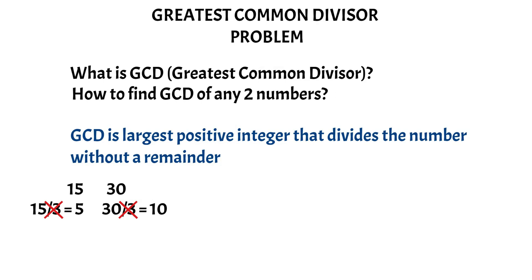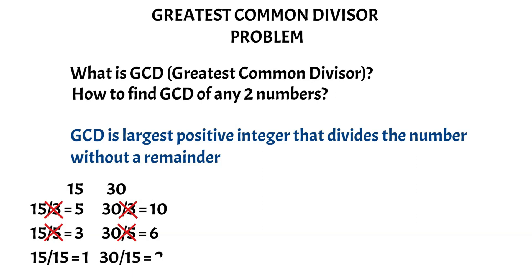Because we have 5 which also divides 15 and 30: 15 divided by 5 is 3 and 30 divided by 5 is 6. But is that the greatest common divisor? Again no. Because for 15 and 30, 15 should be the greatest common divisor, because 15 divides 15 and also 15 divides 30. So 15 divided by 15 is 1 and 30 divided by 15 is 2, which means the greatest common divisor between 15 and 30 is 15.